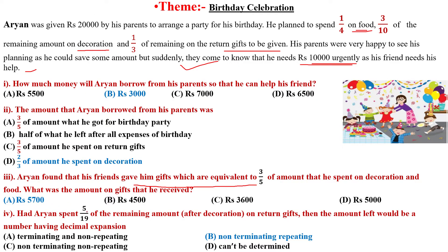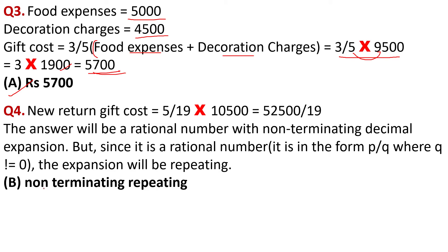Question number four: had Aryan spent 5/19 of the remaining amount after decoration on return gifts, then the amount left would be a number having what kind of decimal expansion? Return gift cost = 5/19 of 10,500 = 52,500/19. The answer will be a rational number in the form P/Q with non-terminating decimal expansion. Since it is rational, Q is not equal to zero, but the expansion will be repeating. Option B is correct: non-terminating repeating.